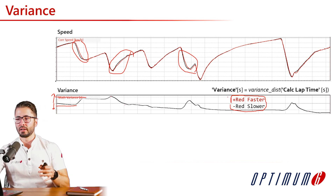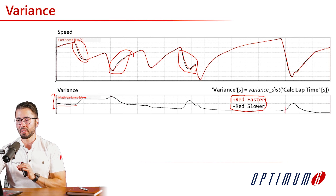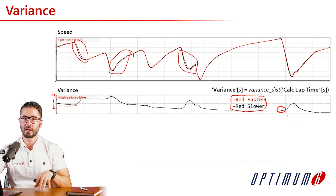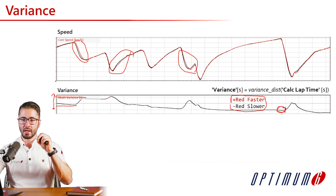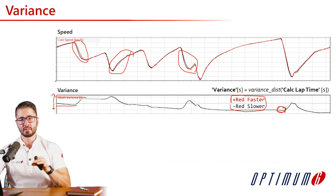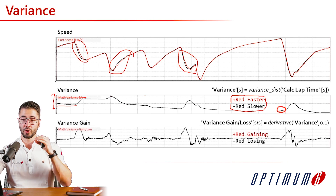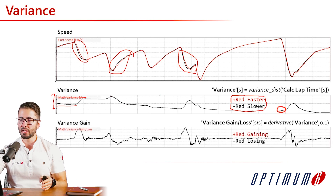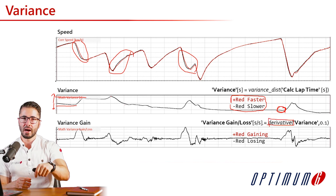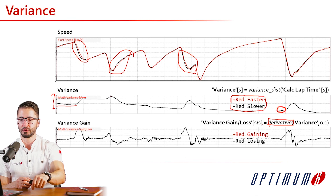This is good to understand how much time a driver lost compared to the other — in this case, one driver would have lost half a second up until that point. But there is a better way to quantify instantaneously how much time one driver is losing: variance gain, which is basically the derivative of the variance. With it, we can identify at any specific point how much time that driver is losing.